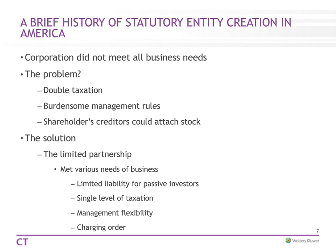The solution to that became the limited partnership. It had a general partner who operated it and passive members who invested in it, but they had limited liability because they were only passive investors. There was only one level of taxation — it flowed through to these investors. Management was far more flexible, and unlike corporation stock, creditors were limited to a charging order, so that protected the LP as well.